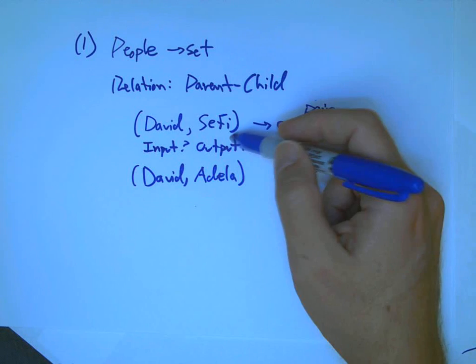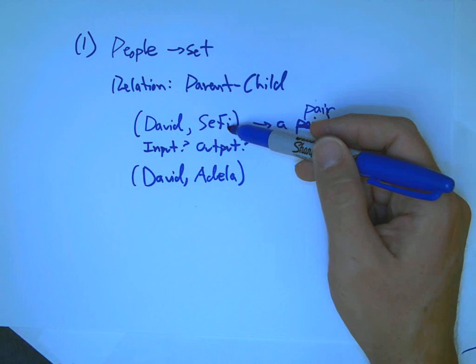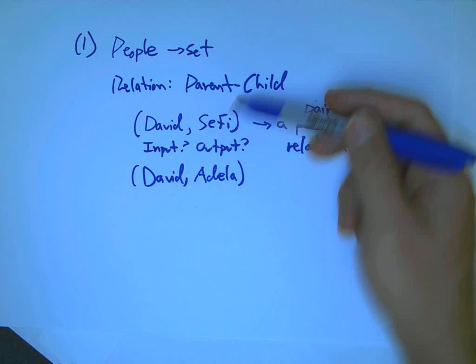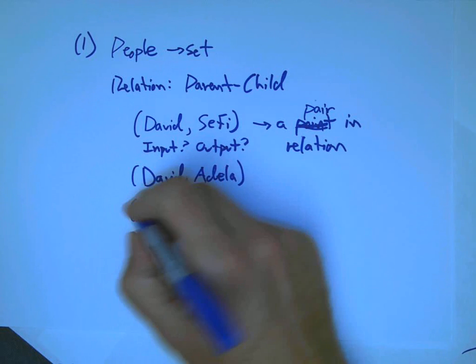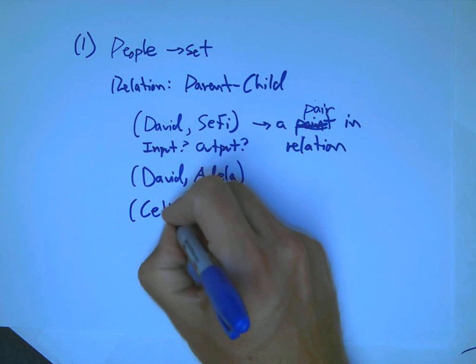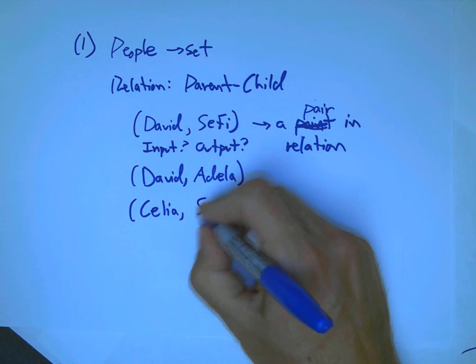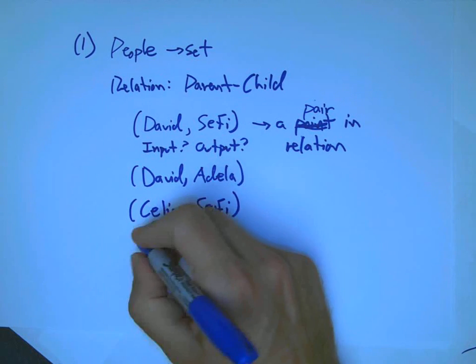And you might think, well, what if you turn it around? What if you just wrote it in the opposite order and wrote the child first and then the parent and thought of the child as the input? Well, then, still, it wouldn't work. Because here's some other parent-child relationships.